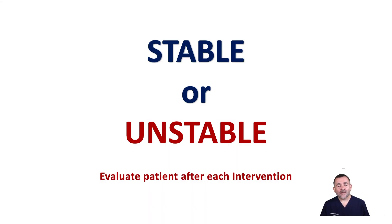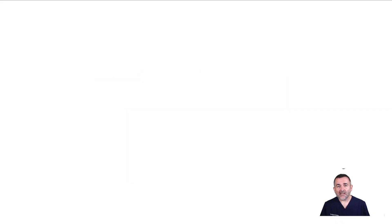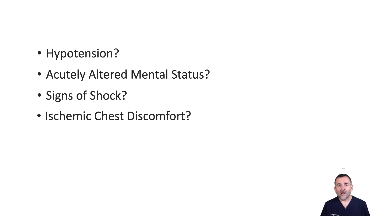We must decide if the patient is stable or unstable. The primary decision point in the algorithm is determining whether the tachycardia is causing the patient's signs and symptoms, or some other illness is causing the tachycardia. The tachycardia is unstable if there is rate-related compromise with signs and symptoms such as hypotension, acute altered mental status, signs of shock, ischemic chest discomfort, or acute heart failure.